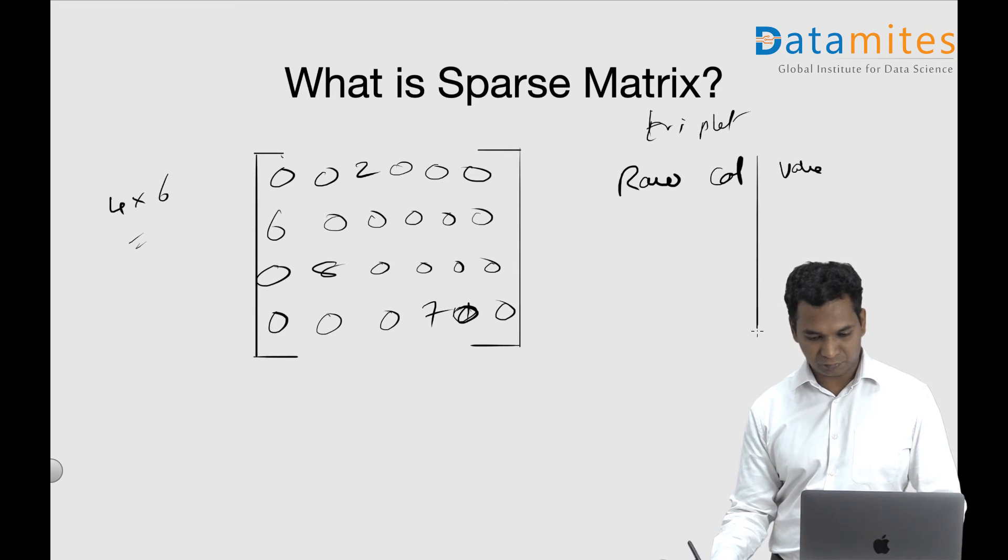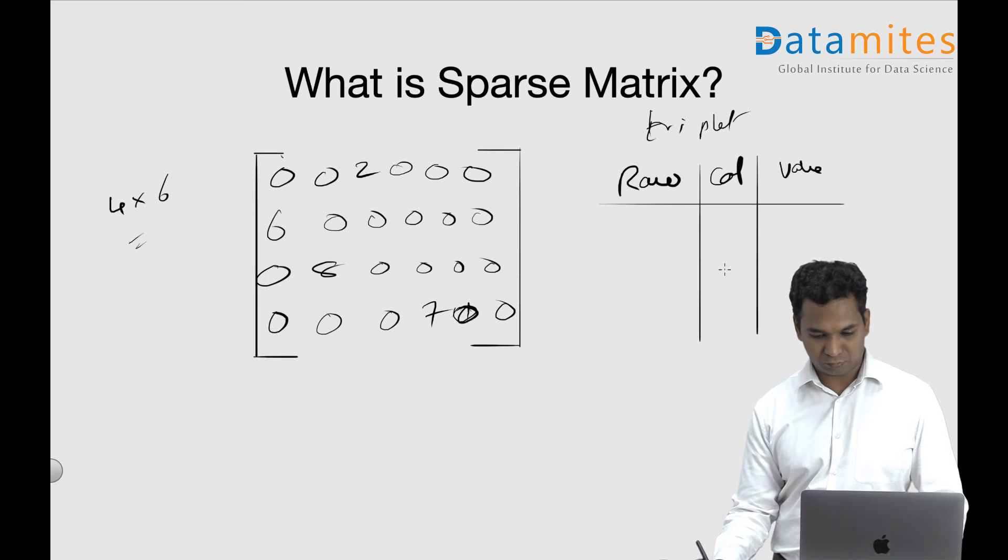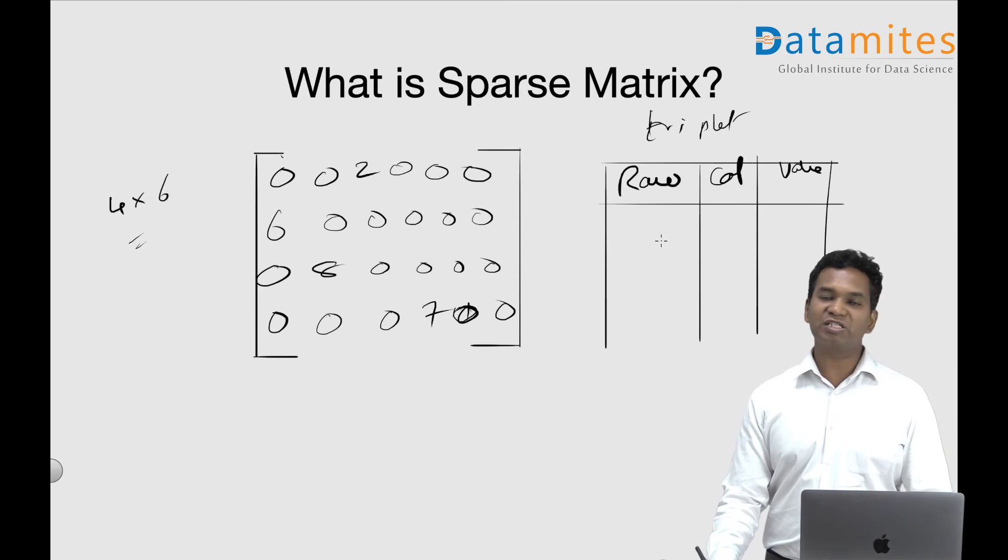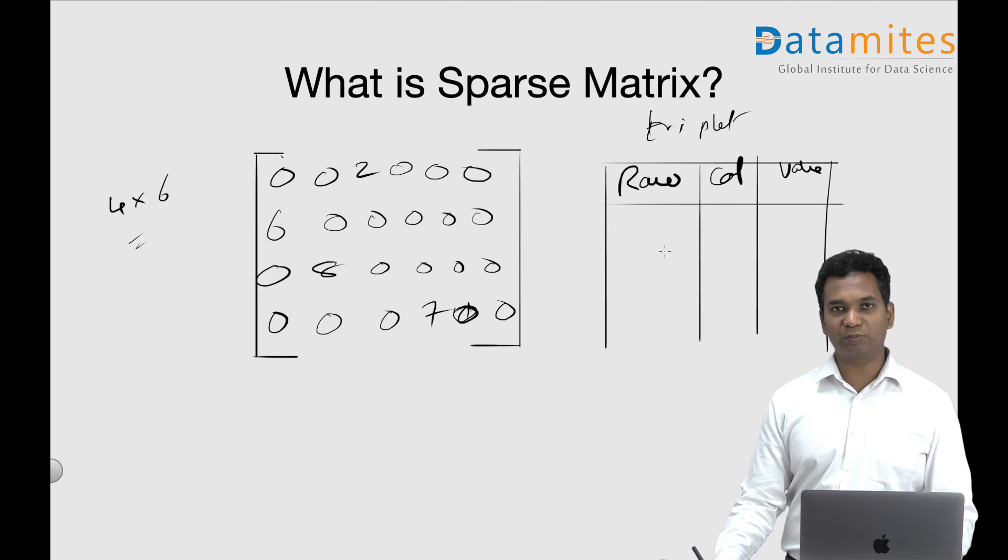And this is called a triplet because you have these three columns. The first record of the triplet talks about how many rows - in our case we have four rows - how many columns,